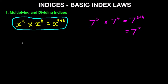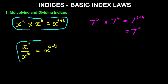What about when we are dividing indices? If we have x to the power of a divided by x to the power of b, this becomes x to the power of a minus b. We're going to put a ring around our rule — that is how we divide indices, as long as the base x is the same.